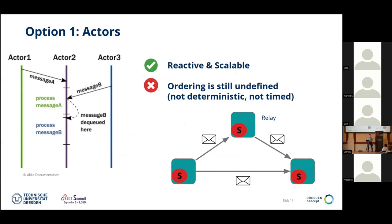Let's look at potential solutions. First: actors. Classical examples are Cuff from Thomas Schmidt or Akka, a Java thing — class-like things with internal state that can pass around messages. But this is non-deterministic: you have a relay where you pass your message to another receiving actor, and it has no idea which message was sent originally or in which order. It is scalable and reactive, but ordering is unsolved.